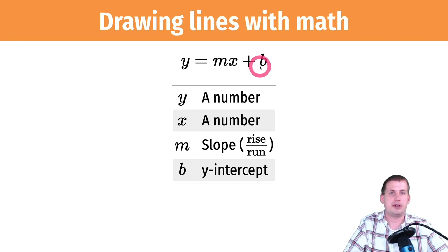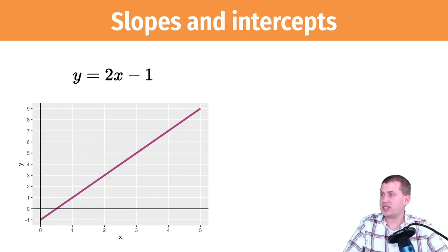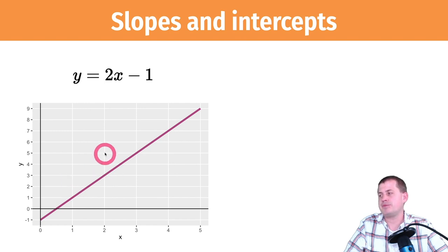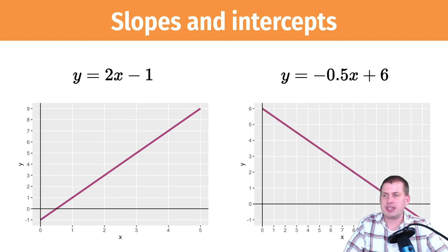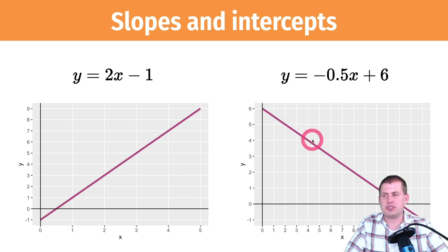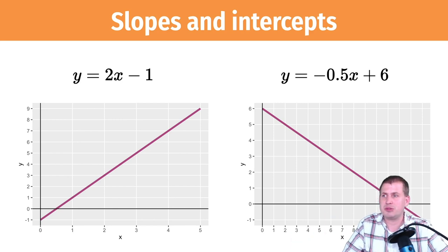Some examples: y = 2x − 1 means the y-intercept is −1, so it starts at −1, and the slope is 2, meaning it goes up 2 over 1 repeatedly. We can also draw a line with a slope of −0.5, meaning down 1 over 2, starting at 6. That's the basic geometry and algebra of how you draw lines.